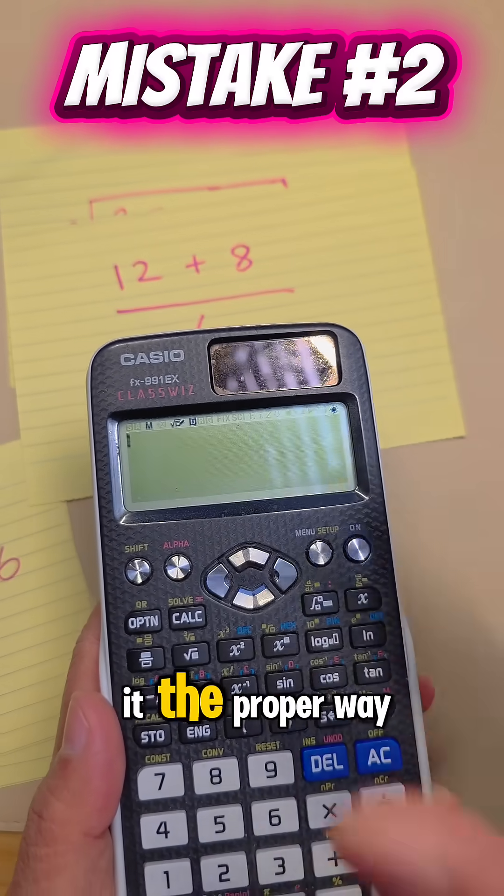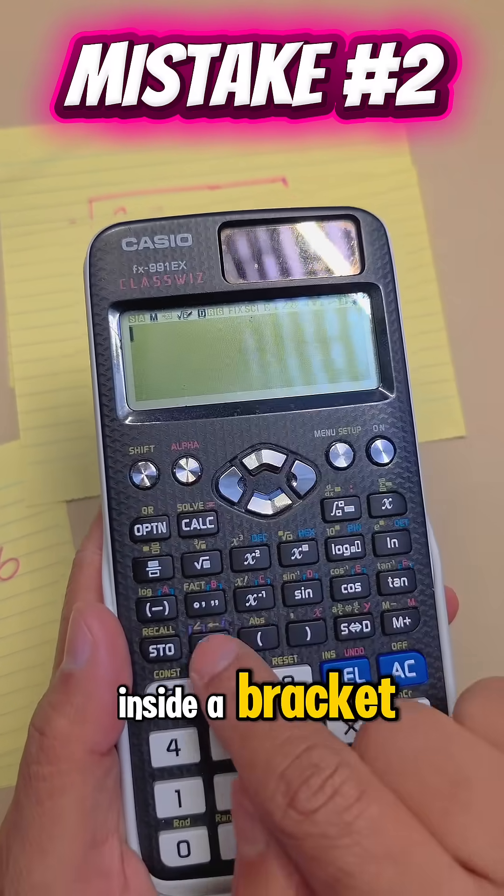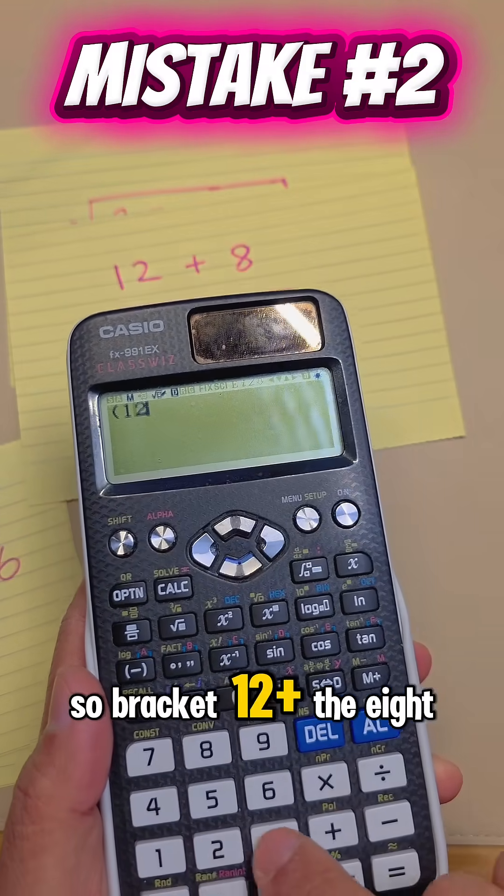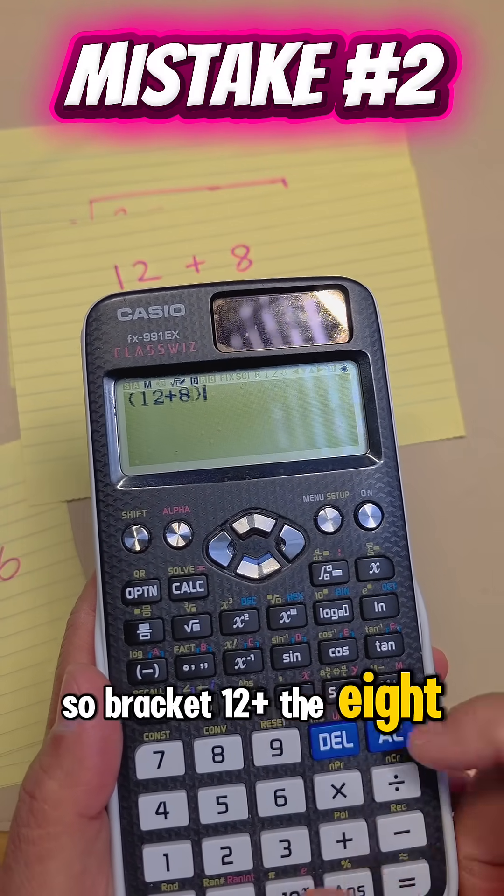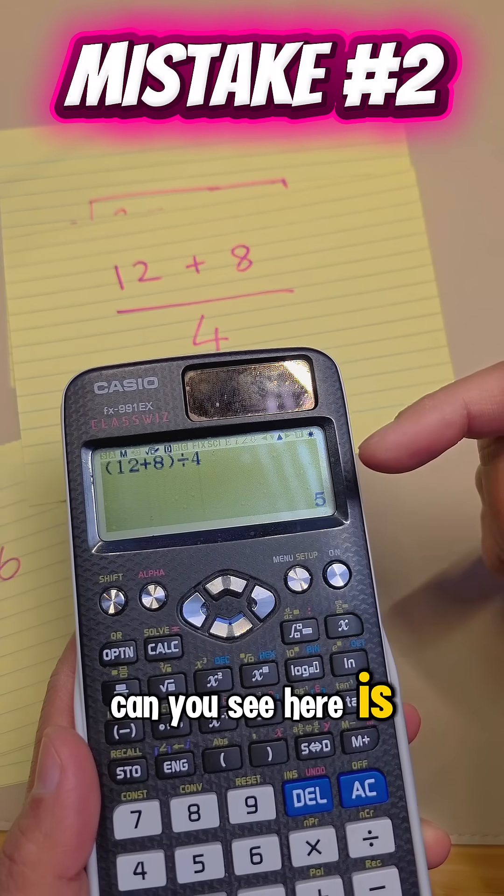We're going to check this by doing it the proper way, which is if you don't want to use a fraction, make sure the top goes inside a bracket. So bracket 12 plus the 8, close bracket, and you can press your divide by 4. And the answer, can you see here, is 5.